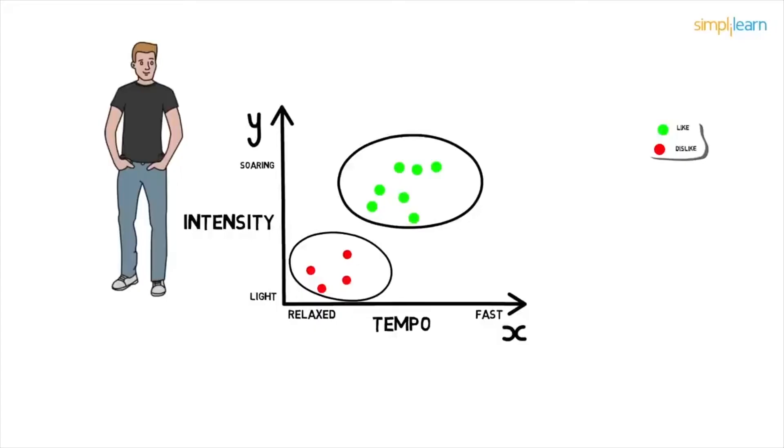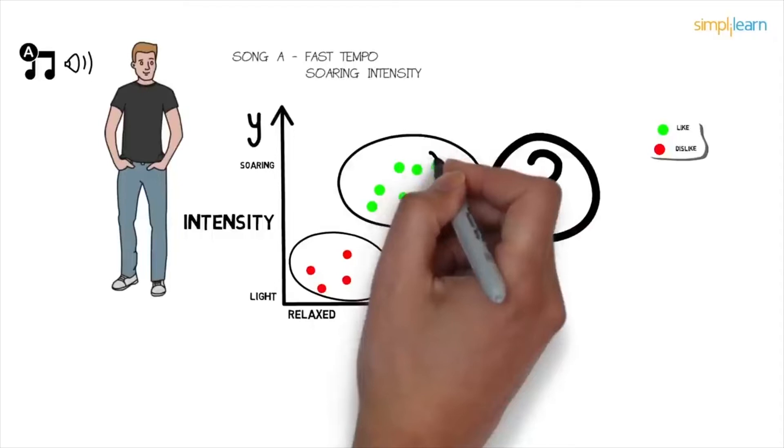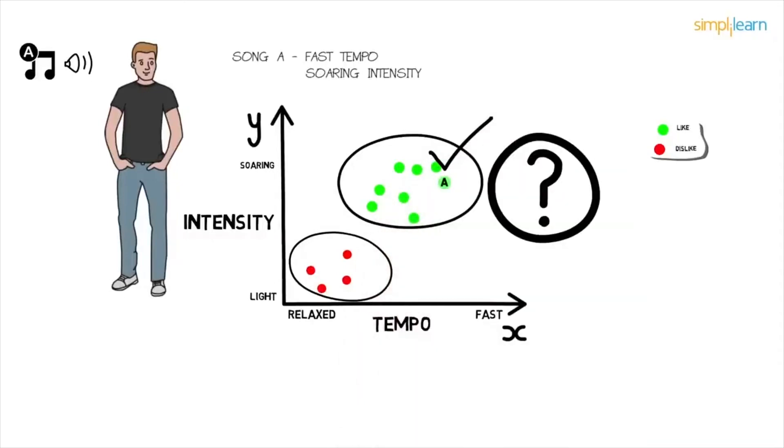So now we know Paul's choices. Let's say Paul listens to a new song, Song A. Song A has fast tempo and soaring intensity, so it lies somewhere here. Looking at the data, can you guess whether Paul will like the song or not? Correct. Paul likes this song. By looking at Paul's past choices, we were able to classify the unknown song very easily.